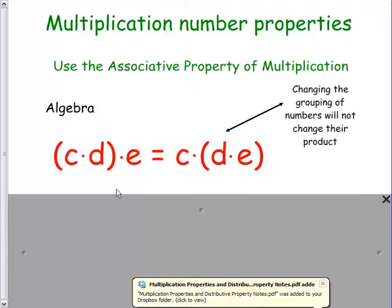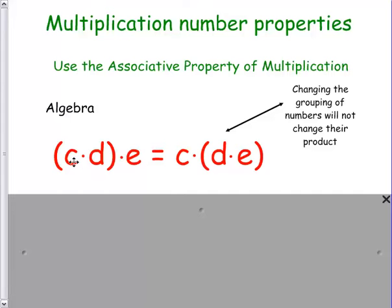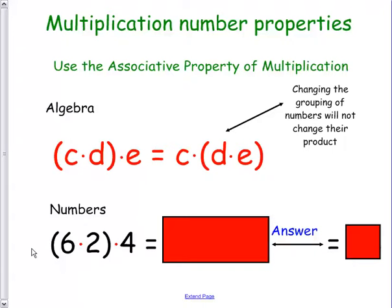If we look at the algebra behind this, notice where the grouping symbols are. D was with C when it was being multiplied, and now it's with E. So changing the grouping of the numbers will not change their product. So just like with the addition, we can also do this when the entire problem is involving multiplication.